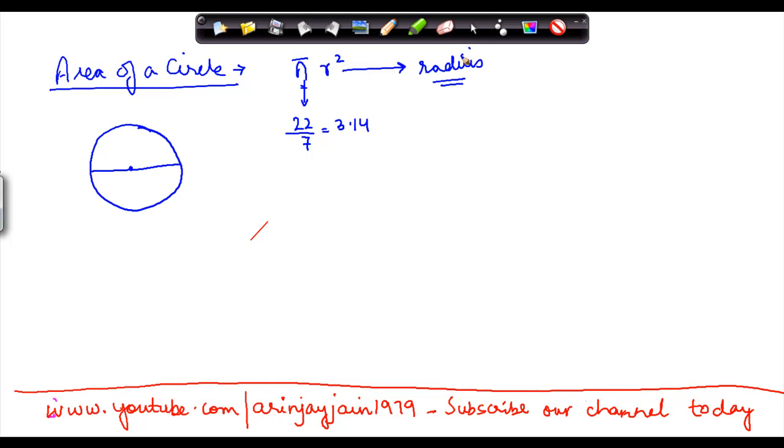Now when you know these two values, or rather only the radius of a circle, then you can find out how much area that particular circle is occupying. Let's take an example. Let's say that the radius of this circle is 14 centimeters.